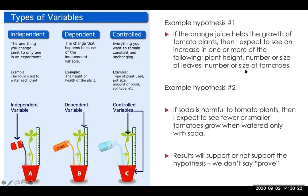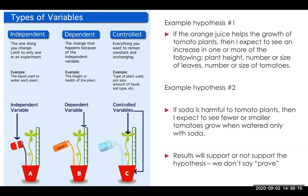Here are a couple of example hypotheses. Let's say we think orange juice will be the best liquid to grow tomato plants. Hypothesis number one: if orange juice helps the growth of tomato plants, then I expect to see an increase in one or more of the following — plant height, number or size of leaves, number or size of tomatoes. You can see the independent and dependent variables, the prediction, and it can be easily tested.